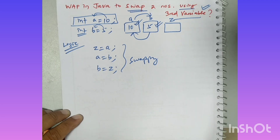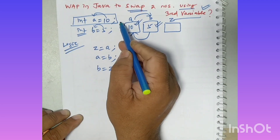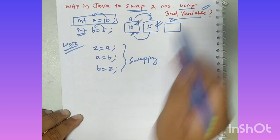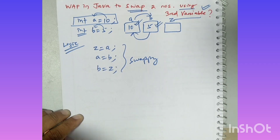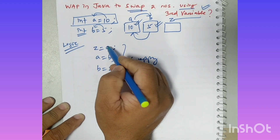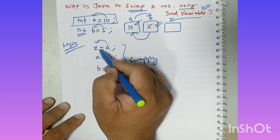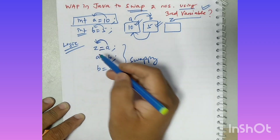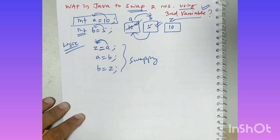So what you have to do is swap two numbers using a third variable. I am writing: int A equal to 10, int B equal to 5, directly assigning the values. The third variable I am using here is J. So J equal to A — that means A value will go to the J part. That is the assignment operator, assigning values from right to left.